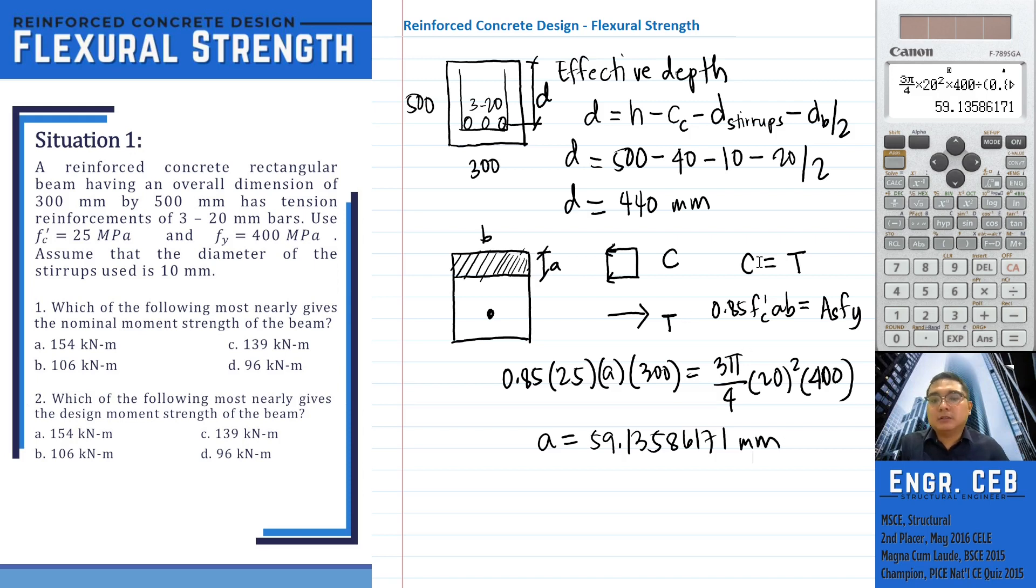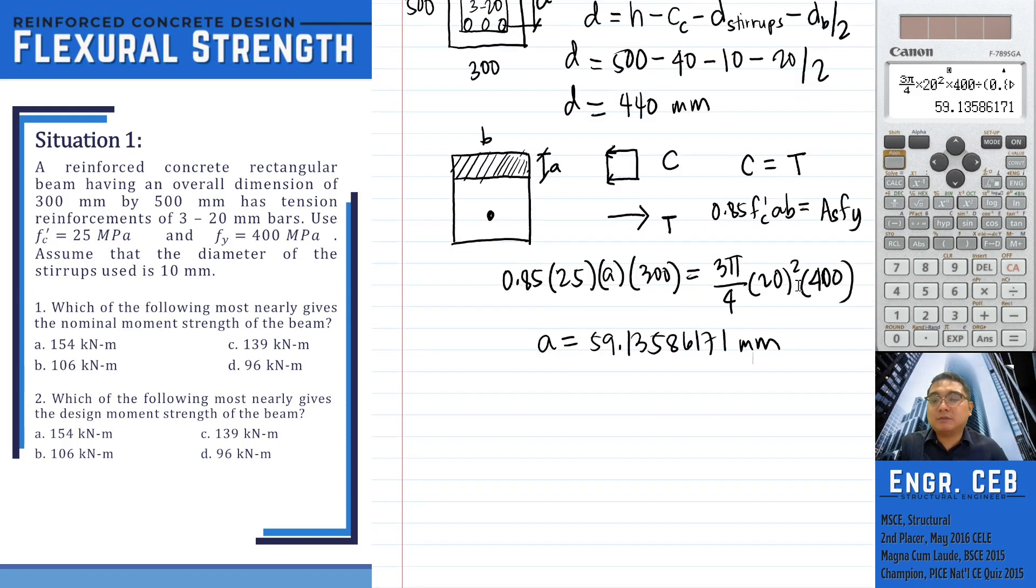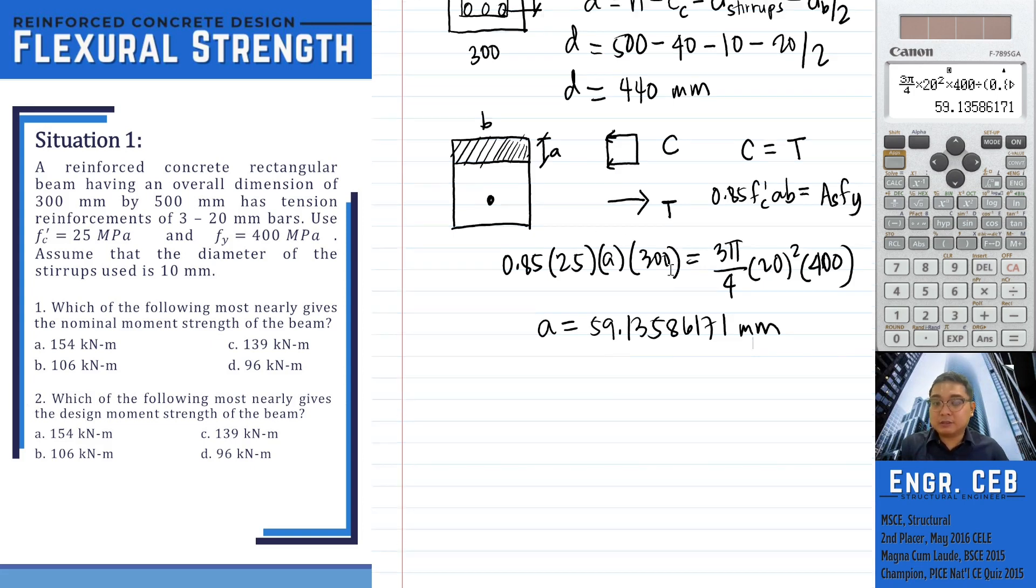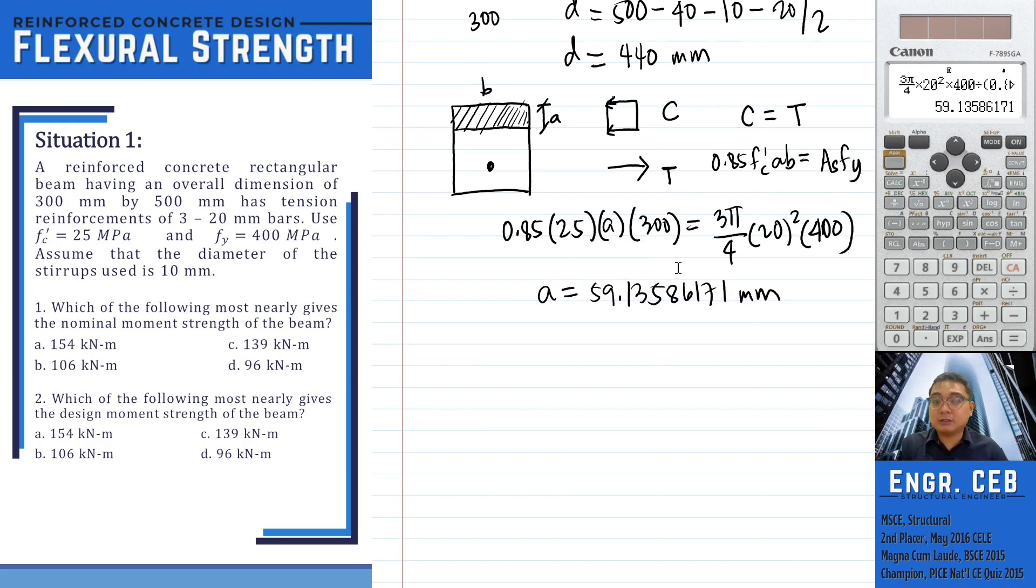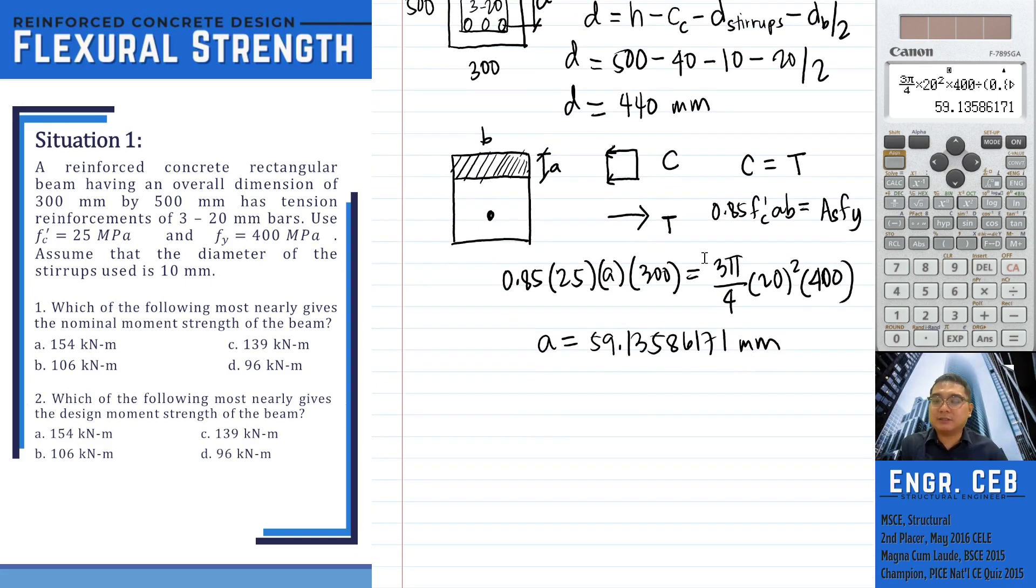In the equation that we have written, we have used the value of the yield strength of the steel. Therefore, we have assumed that the tensile reinforcement yields. So we have to check on that, or we have to confirm that the steel yields. We will now check the corresponding stress on the tensile reinforcement.